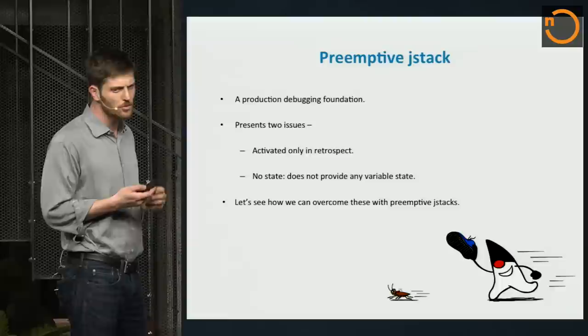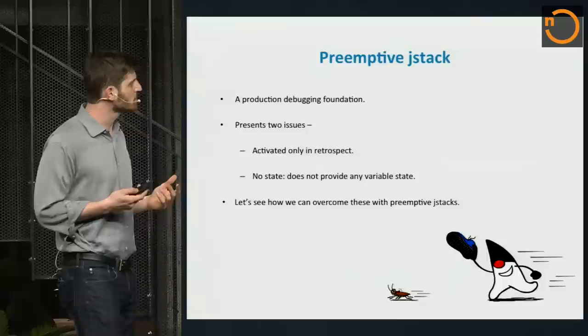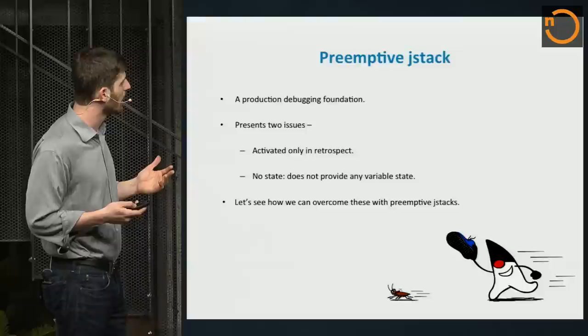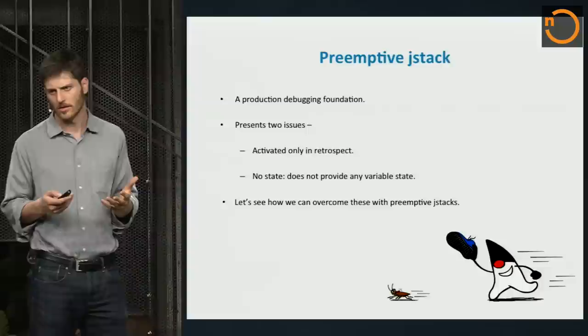There are two problems inherent with those tools, especially in production. The first one is there's no state — something we just talked about, how we can embed state into every thread dump. The second problem is that we can only use those tools when we're actually there. In production, when something happens, we're usually not there. We only get there in retrospect. This is different from debugging normally when we're present when the issue happens.